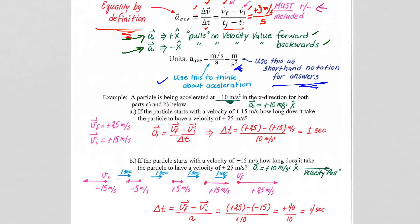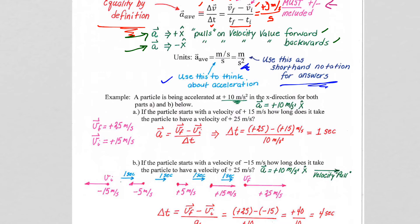Let's look at a specific example. If a particle is being accelerated at positive 10 meters per second squared — positive 10 meters per second every second — that's our acceleration, and notice it's directional. That positive means the velocity value is being pulled in the positive x direction 10 meters per second every second. In this example, if the particle started with an initial speed of positive 15, and it goes to positive 25, after one second we increased by 10 meters per second. It's speeding up.